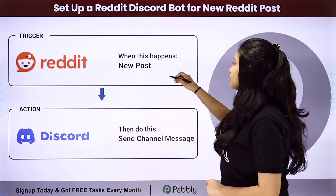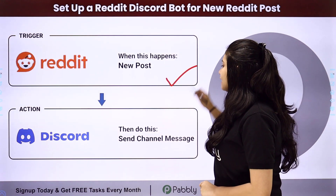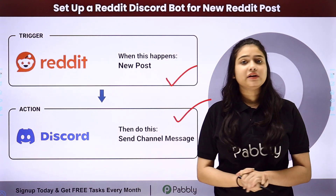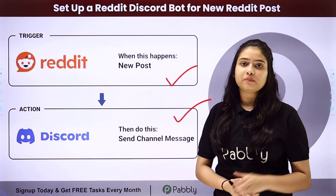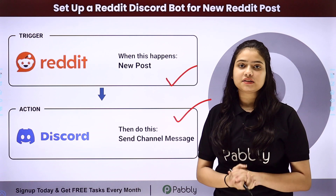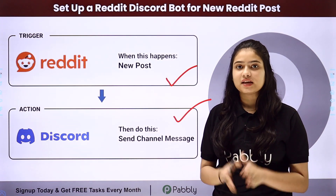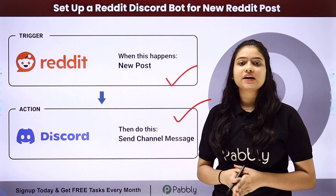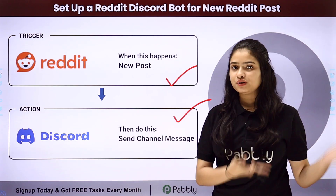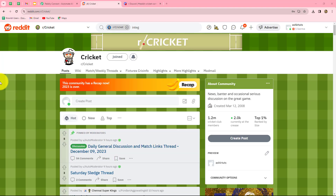Here we have Reddit in our trigger and Discord in our action. We will be connecting both of them using Pabbly Connect to automate this entire process. In this video, we are going to learn how we can automatically send a Discord channel message whenever a new post is shared on our Reddit community.